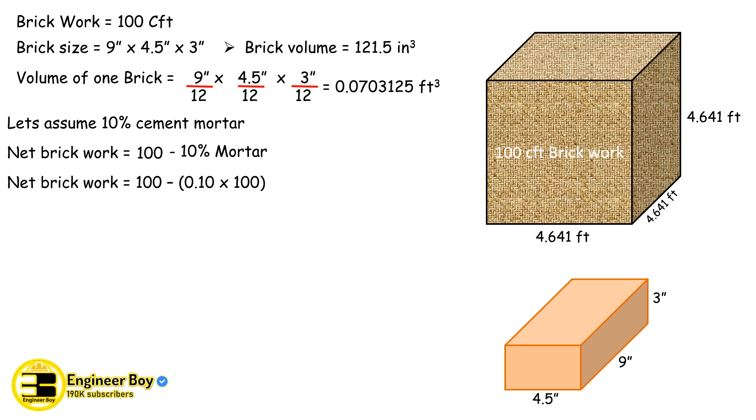10 percent can be 0.1 times 100, and that's the same thing as 10. So 100 minus 10, that's 90 cubic feet. So that's now the net brick work. From this net brick work we can calculate the number of bricks having the same size. We will just divide the net brick work, which is 90 cubic feet, by the volume of one brick, so it can give us the number of bricks. So that's of course 1280 bricks.